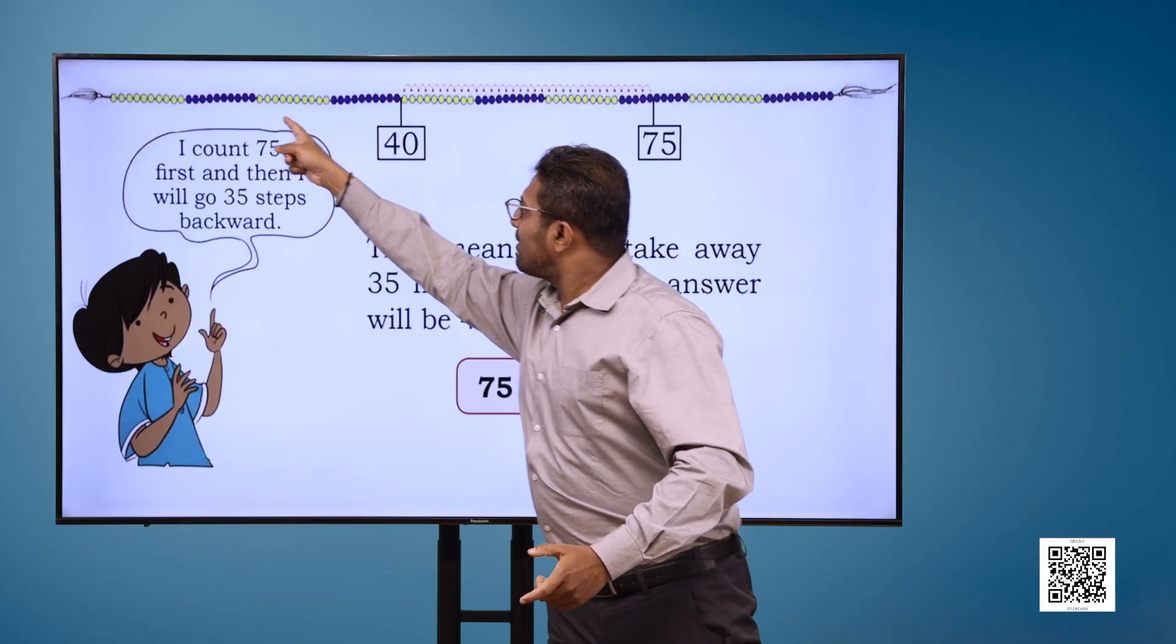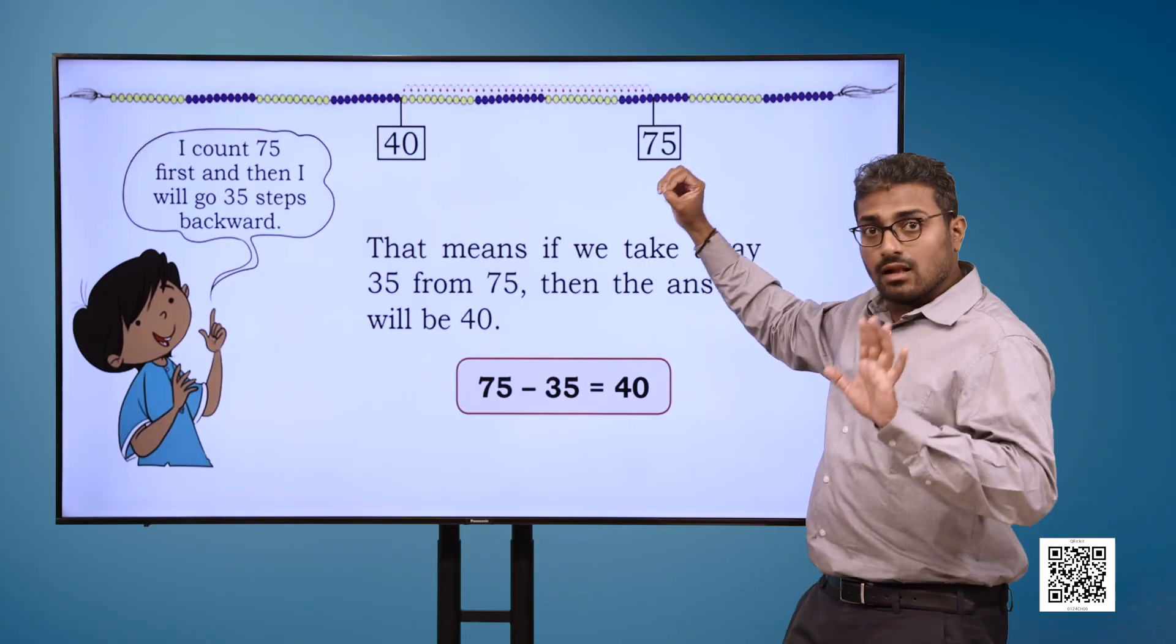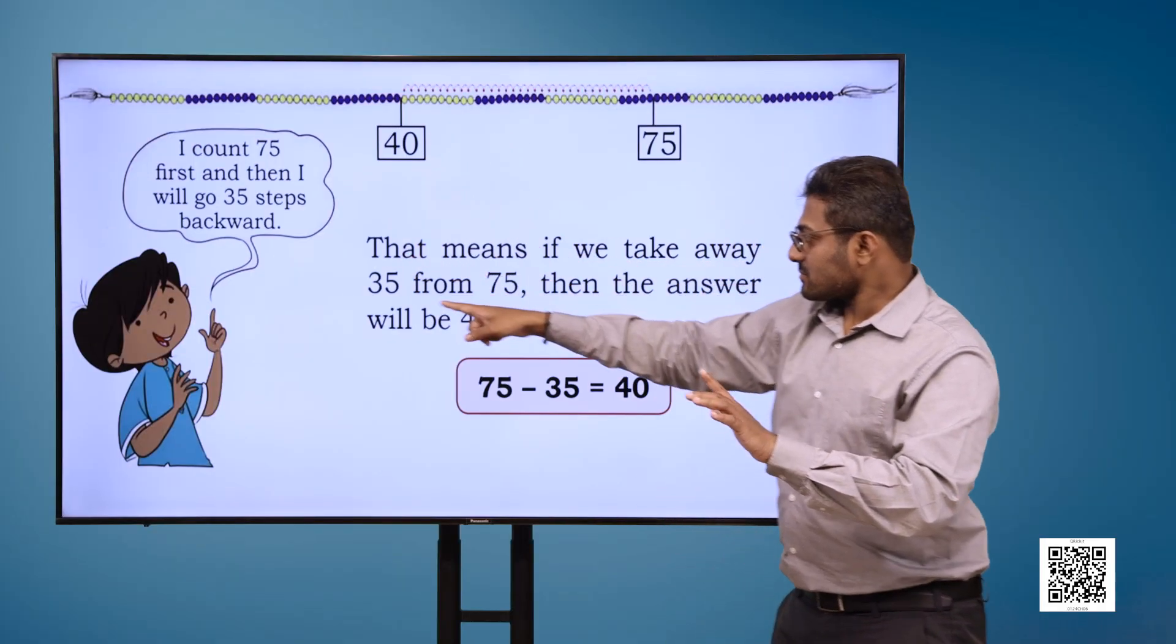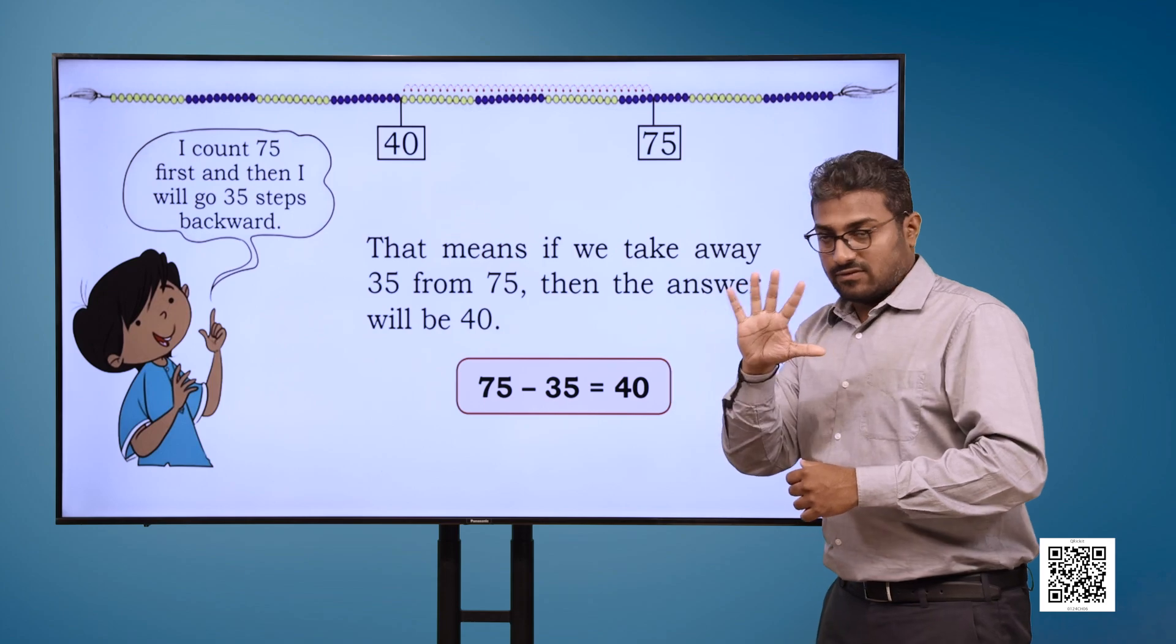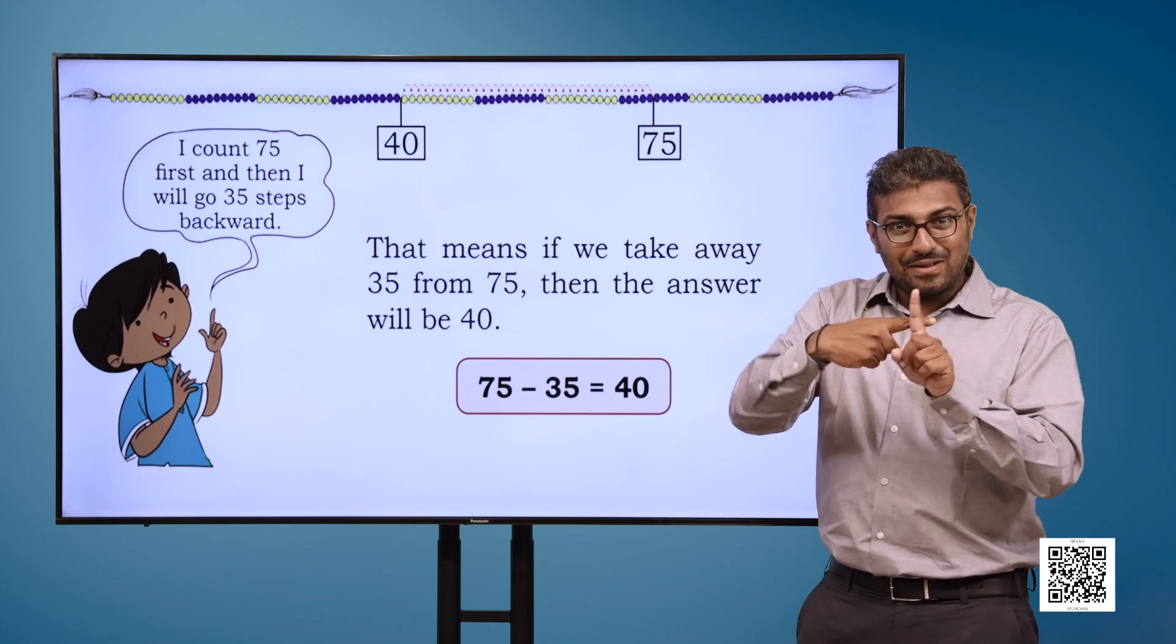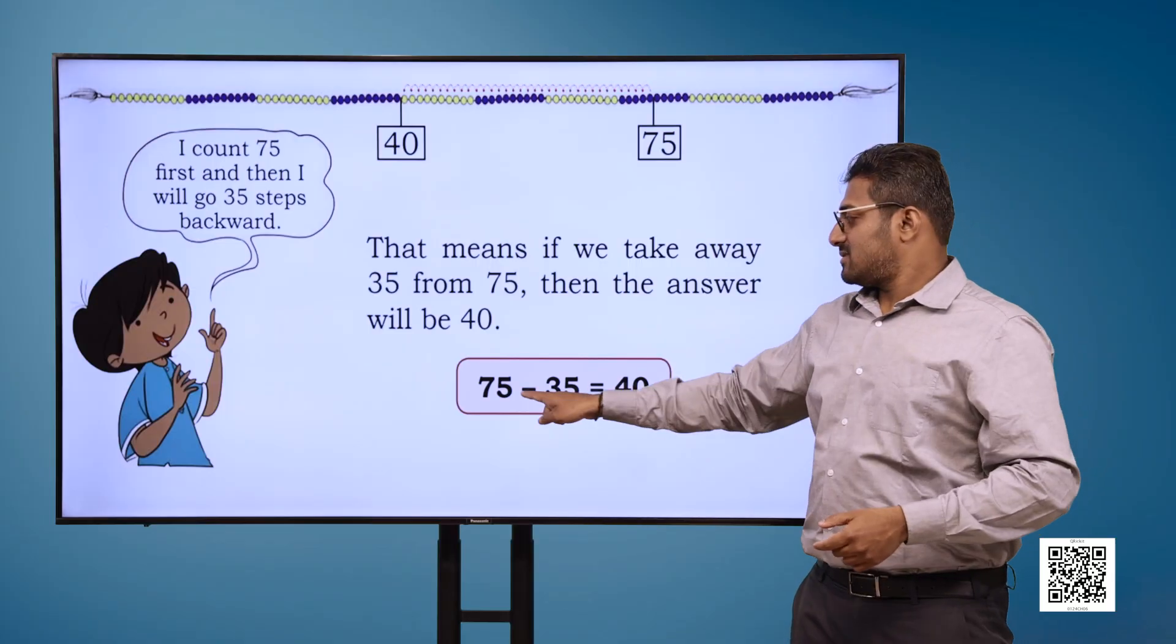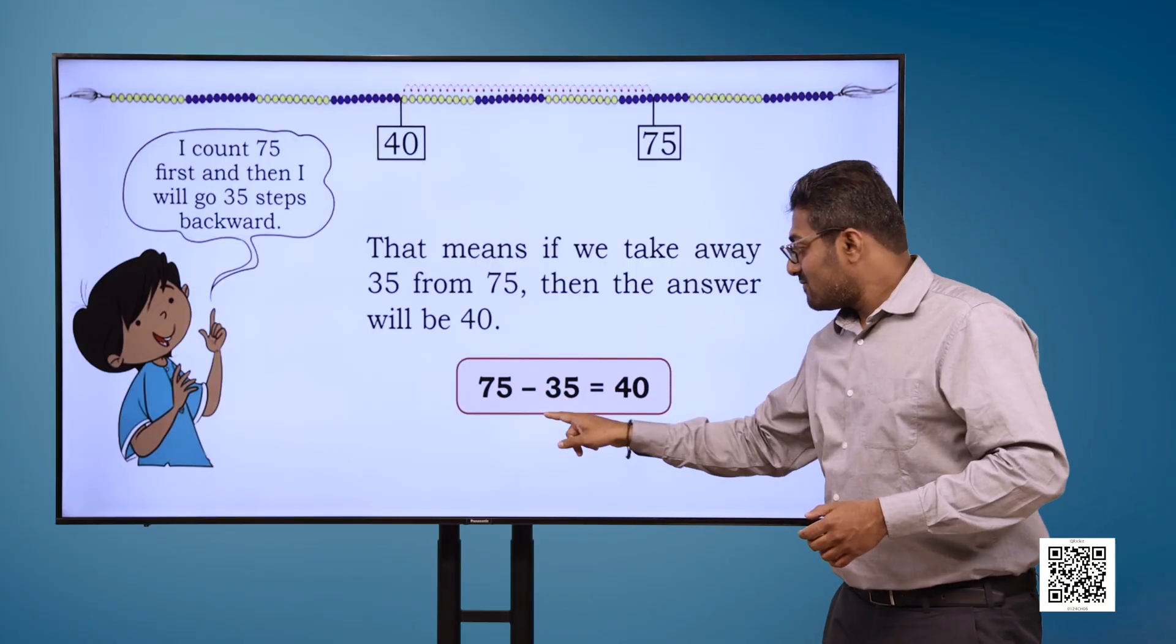It has two cards. The first card has number 40 on it and the second one has 75 written on it. If we go 35 beads backwards from 75, we will arrive at 40. Which is, 75 minus 35 equals to 40.